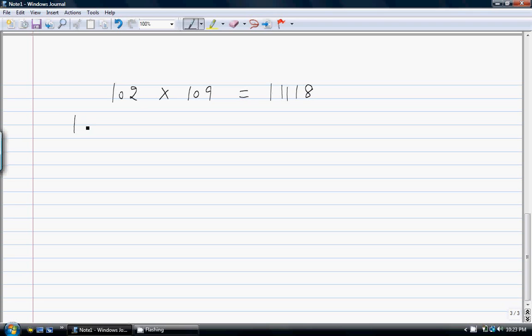So suppose I have 100 plus x and I want to multiply it by 100 plus y. So if I solve this I will have 10,000 plus (x+y) into 100 plus xy.